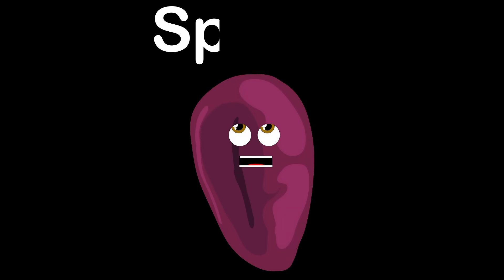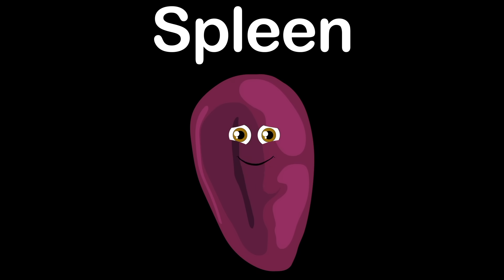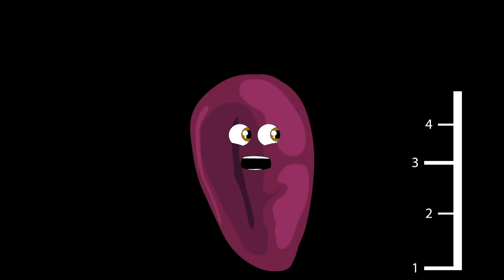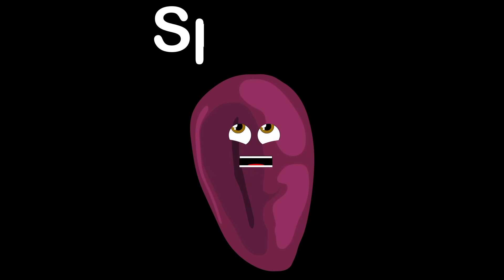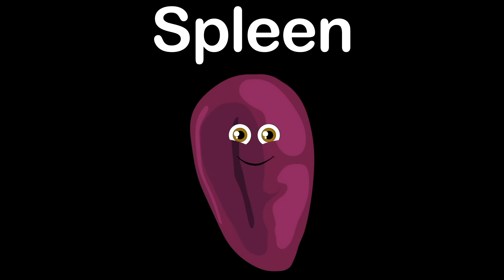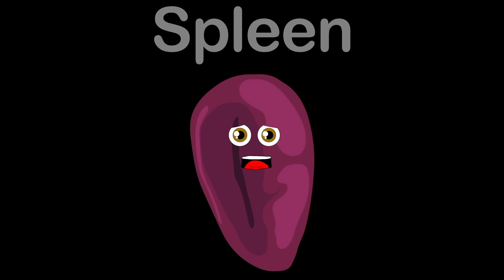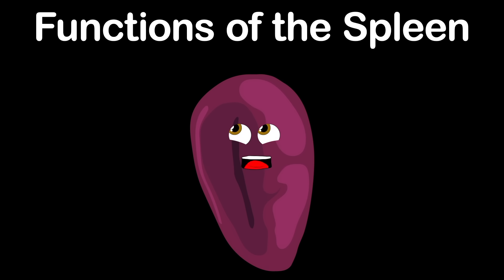I am your spleen. You will learn what this means. I am purple, five inches long, and I'm shaped like a bean. I'm your spleen. You will learn what this means. I produce antibodies and I keep your blood clean.